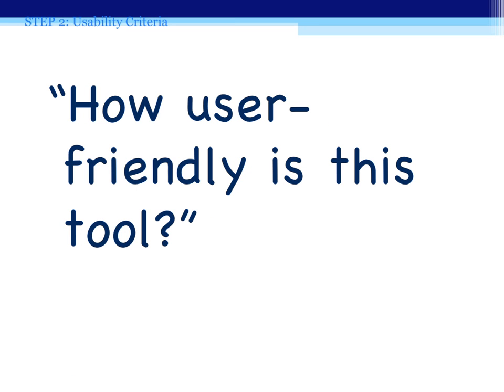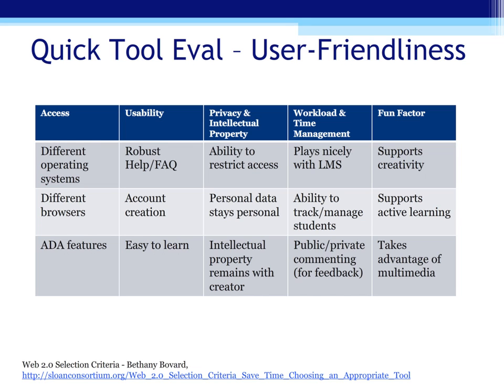Your next step is to determine how user-friendly the tool is. I'm using the phrase user-friendly to include not only how easy the tool is to use, but also how well it supports your goals for privacy and copyright, not to mention how easy it will be for you to use for teaching. Evaluating tools with these criteria in mind will save you time by narrowing your tool choices to a few that you will evaluate further. There is no sense in spending time evaluating a tool for its educational benefits if it doesn't pass the user-friendly criteria. While this was originally named the Web 2.0 Selection Criteria Checklist, it can be applied to any technology.